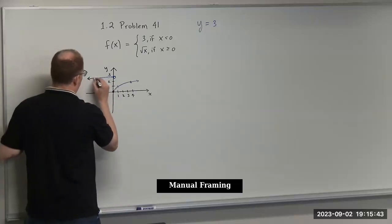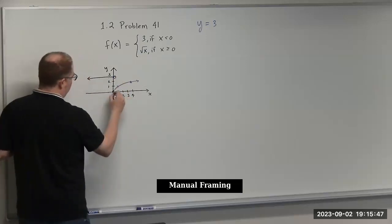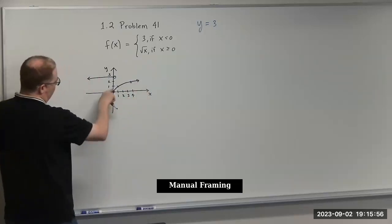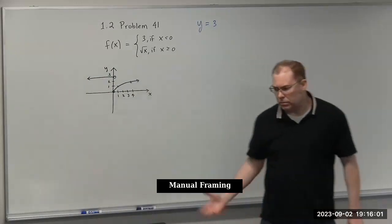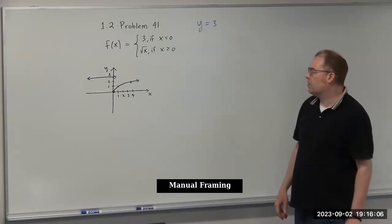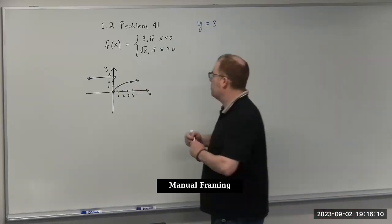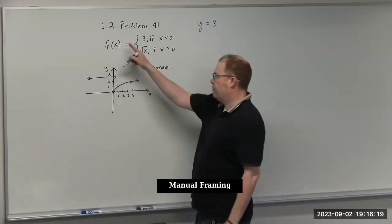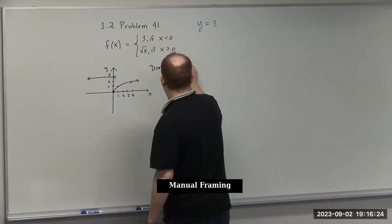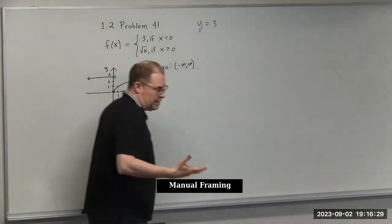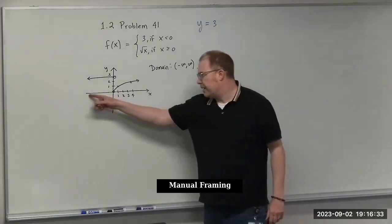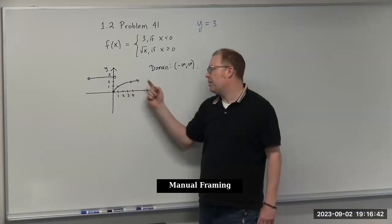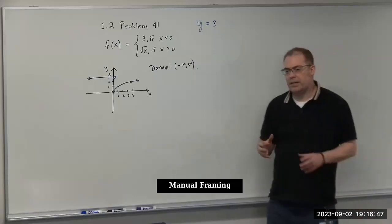We have to be careful at x equals zero. Since the square root piece is defined for x greater than or equal to zero, x equals zero belongs to that branch, giving a solid point at (0, 0). For the constant piece at x equals zero, the point is open, since the restriction is strictly less than zero. So the function jumps: open point at (0, 3) and solid point at (0, 0).